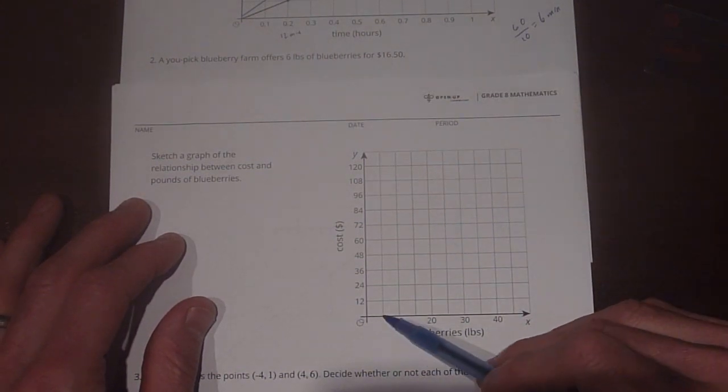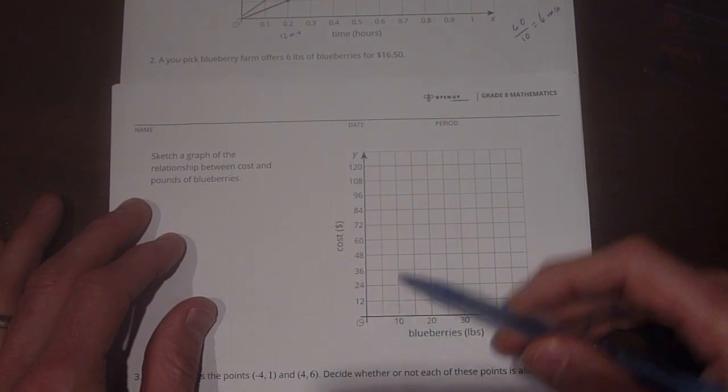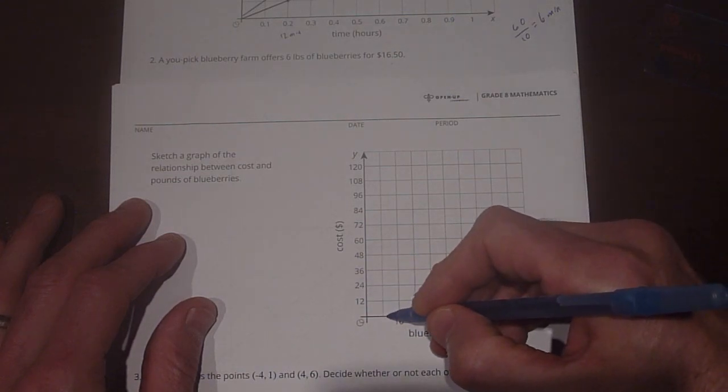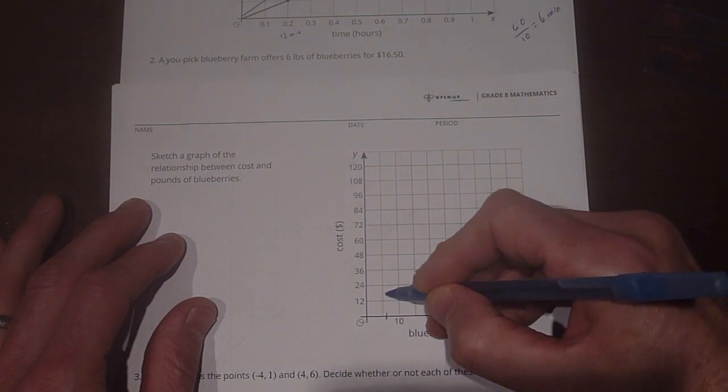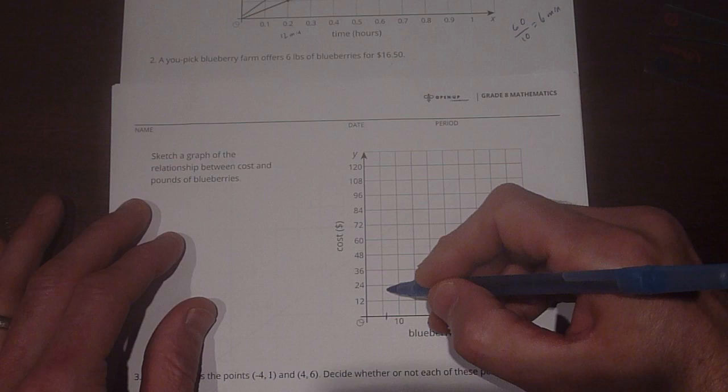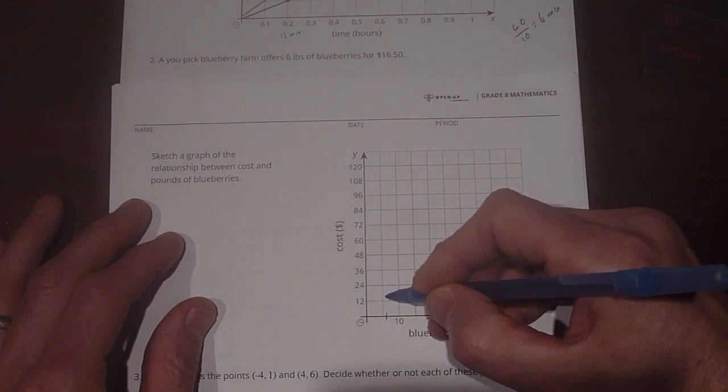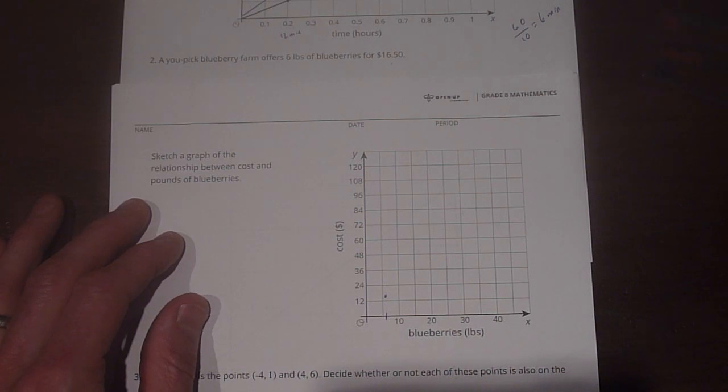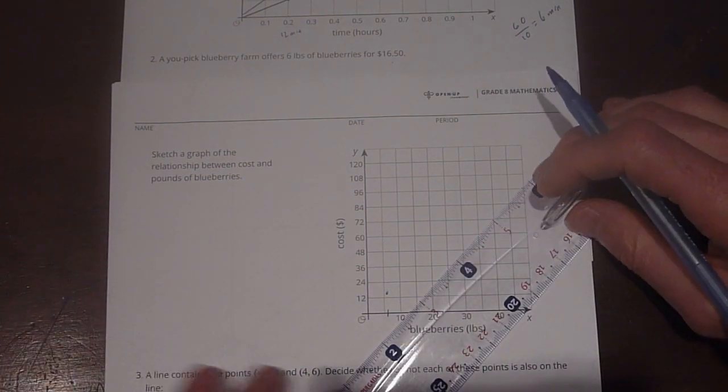So we have 10 and then 5 here. Okay. So we're right about here at 6 pounds of blueberries, and we take that up to $16.50. Well, this is 12 and 24, so right in the middle of that is going to be about here, and we're just going to be below that. I think right about there would be about $16.50.